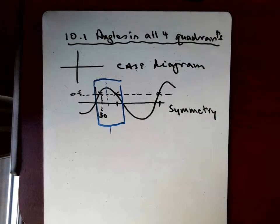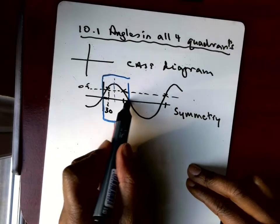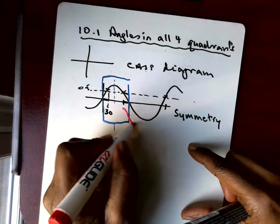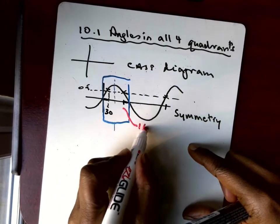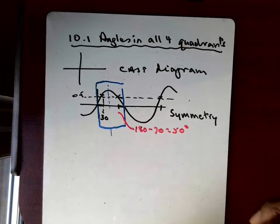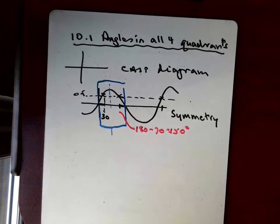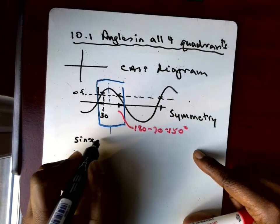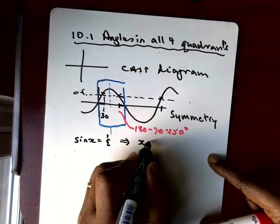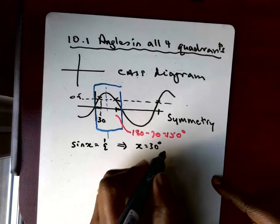So that means if this gap here is 30 degrees, this gap here is also 30 degrees. So I can easily work out what this other value is, because if that's 180, if I do 180 minus 30, then actually that's going to be 150. So already I can see that if sine x equals a half, then basically I've got x equals 30 degrees, which I got from the calculator. By using the symmetry of the graph here, I can say that x also equals 150 degrees.